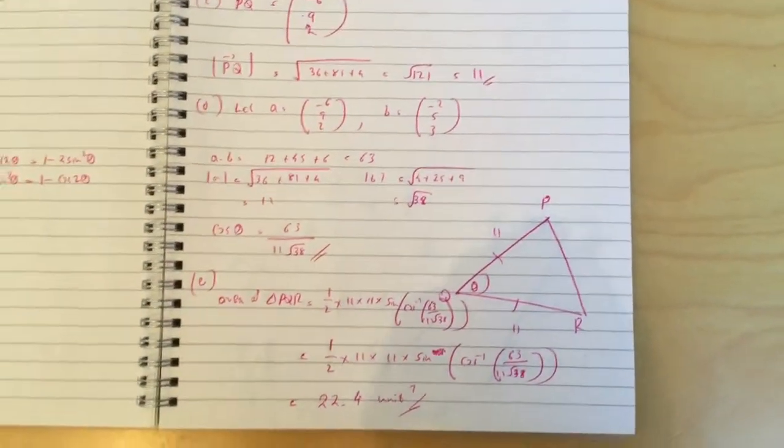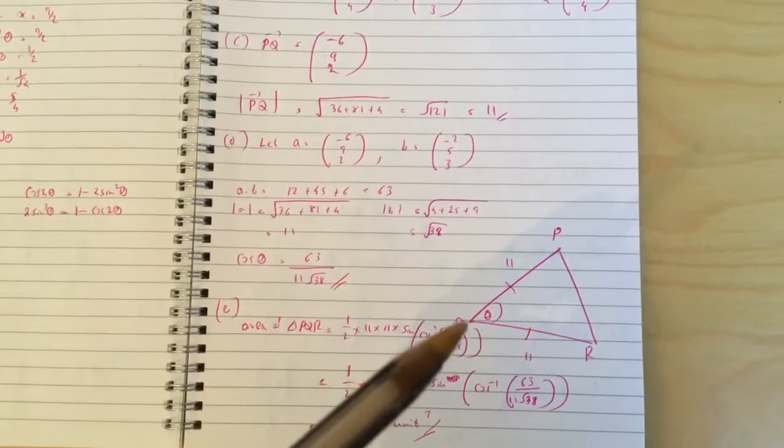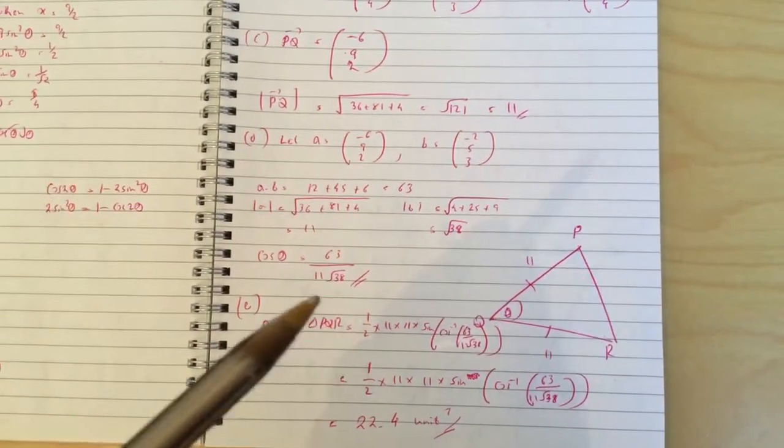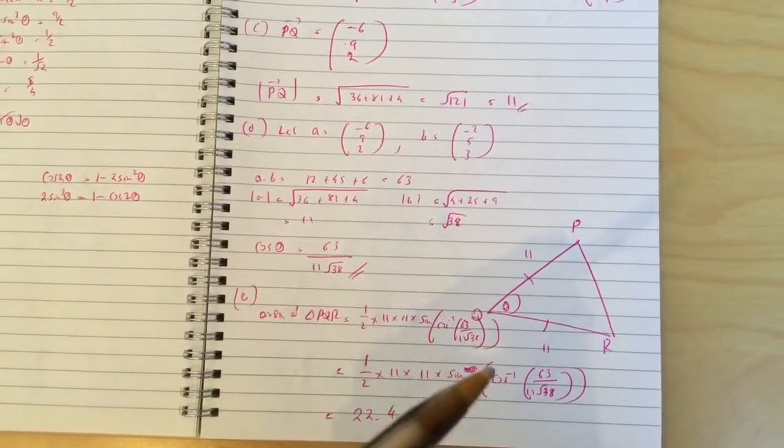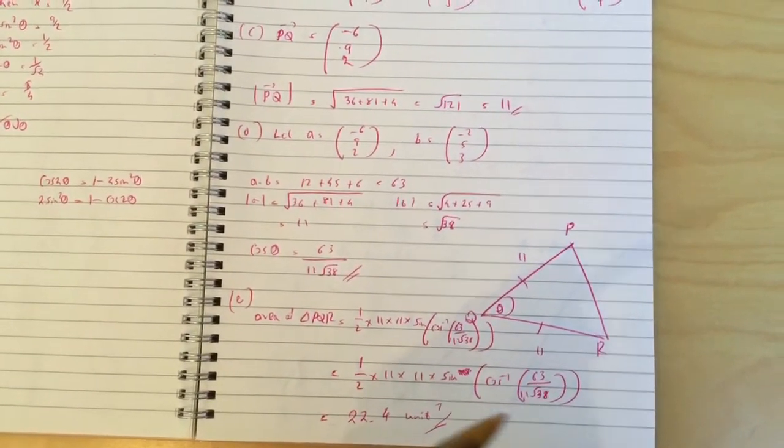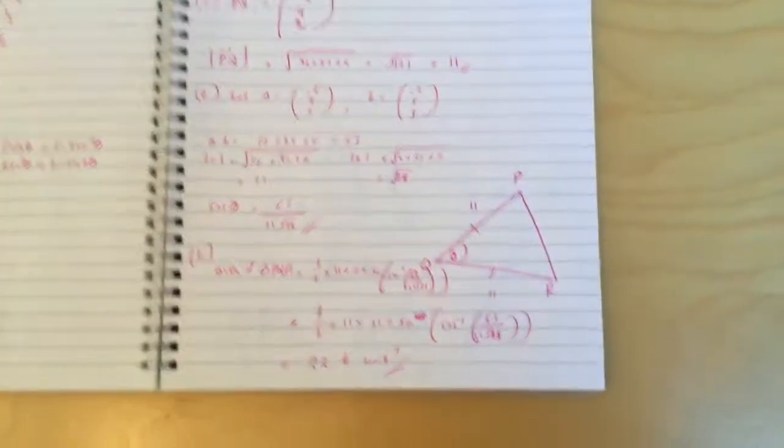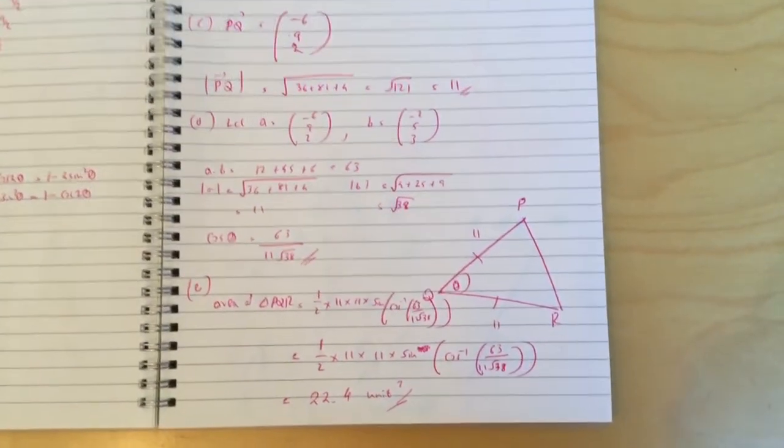For the area, it'll be half times this length is 11, this length is 11, they're equal, and then angle theta you can just do cos inverse of this. What I did is I plug it in sine of cos inverse of this and you get 22.4 unit squared. Good luck for tomorrow guys and I'll try to write S2 if I can.